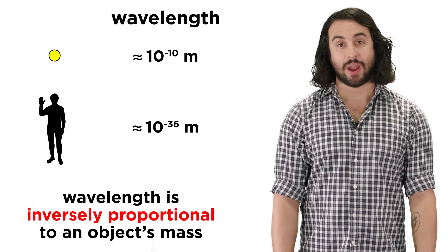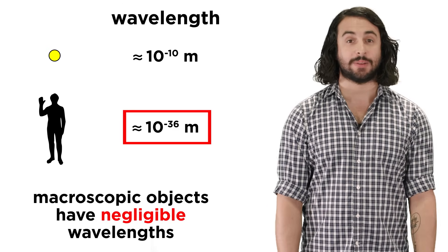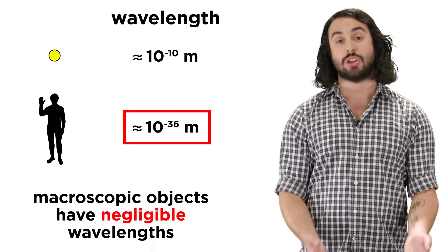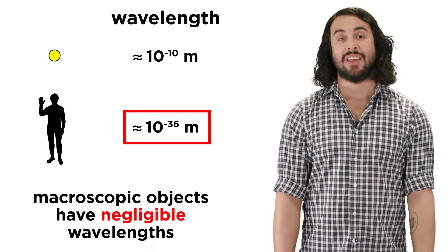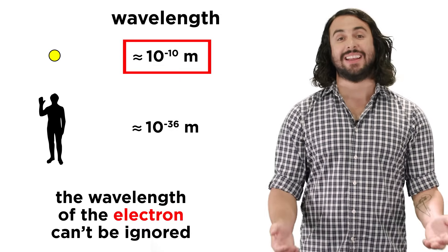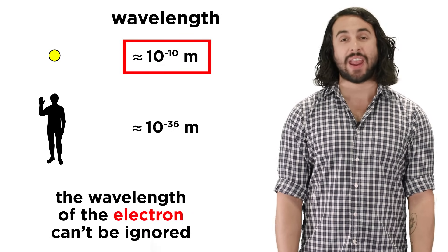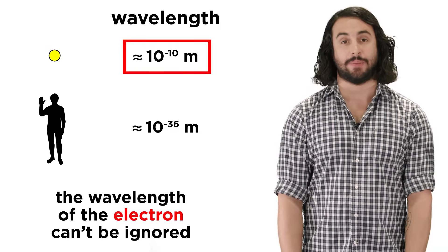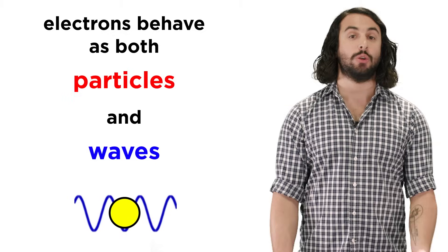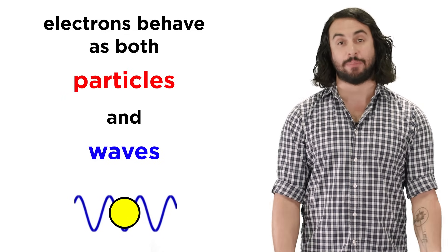However, an object's wavelength is inversely proportional to its mass, so objects bigger than a molecule have a wavelength that is so tiny that it is completely negligible. But an electron is incredibly small — so small that its wavelength is indeed relevant, being around the size of an atom. So we must view electrons as both particles and waves from now on.